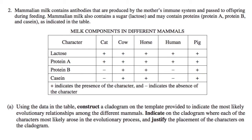Question 2. Mammalian milk contains antibodies produced by the mother's immune system and passed to offspring during feeding. Mammalian milk also contains lactose and may contain protein A, protein B, and casein as indicated in the table. Using the data in the table, construct a cladogram to indicate the most likely evolutionary relationships among the different mammals. Indicate where each character most likely arose in the evolutionary process and justify the placement of the characters on the cladogram.